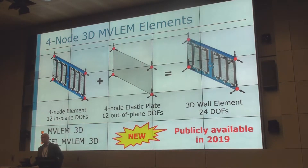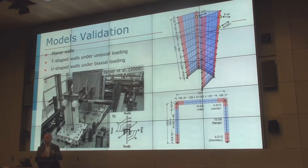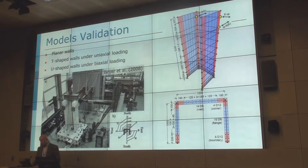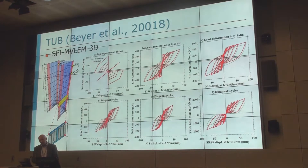It will be available in OpenSees publicly sometime this year. We validated these models against planar walls just to make sure they still work okay, and then against T-shaped and U-shaped walls. Particularly of interest are non-planar walls subjected to multi-directional loading. Here you see one example — the great tests by Katrin Beyer in Switzerland — where they have U-shaped walls pushed in a spider web loading configuration. We validated this macro model against those tests.